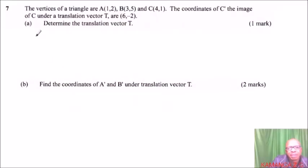Question number 7. We are told the vertices of a triangle are A(1,2), B(3,5), and C(4,1). The coordinates of C', the image of C under a translation vector T, are (6,-2). Determine the translation vector T. Part B: find the coordinates of A' and B' under the translation vector T.